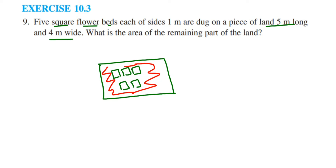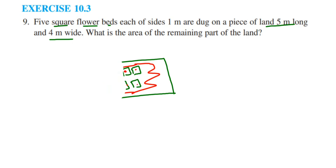So how can we solve this? First we are going to find out the area of the whole piece — that is the green color part, the whole rectangle. From there we are going to subtract the area of the 5 flower beds. When we subtract it, the remaining area we get is the remaining part of the land.